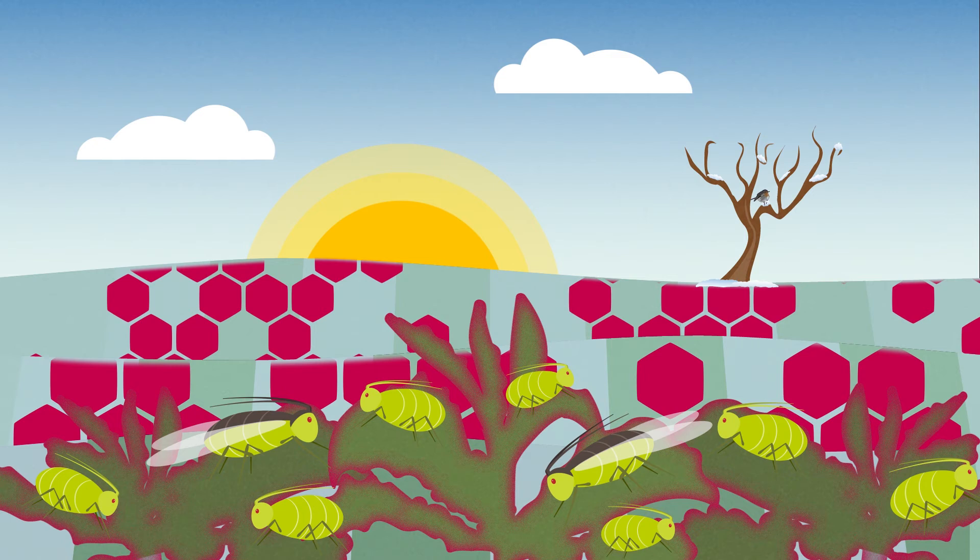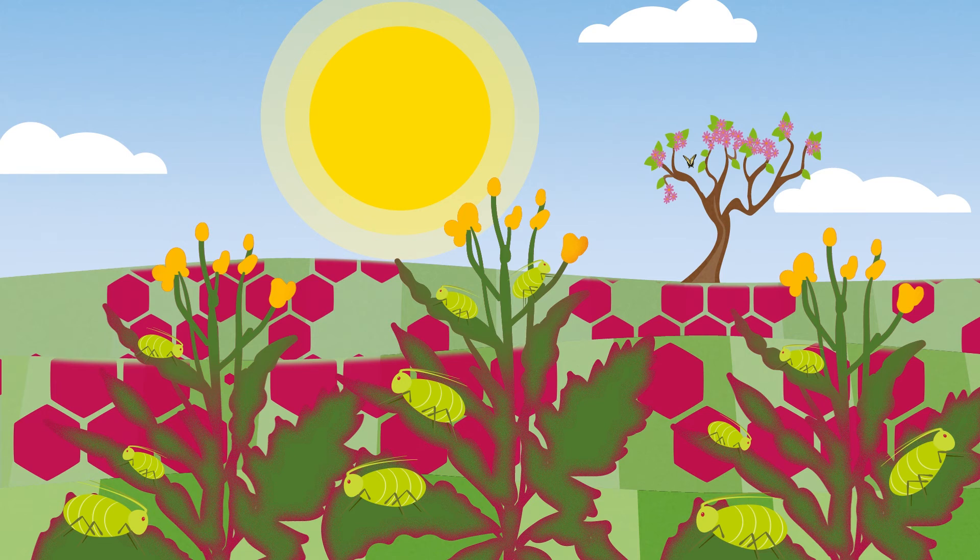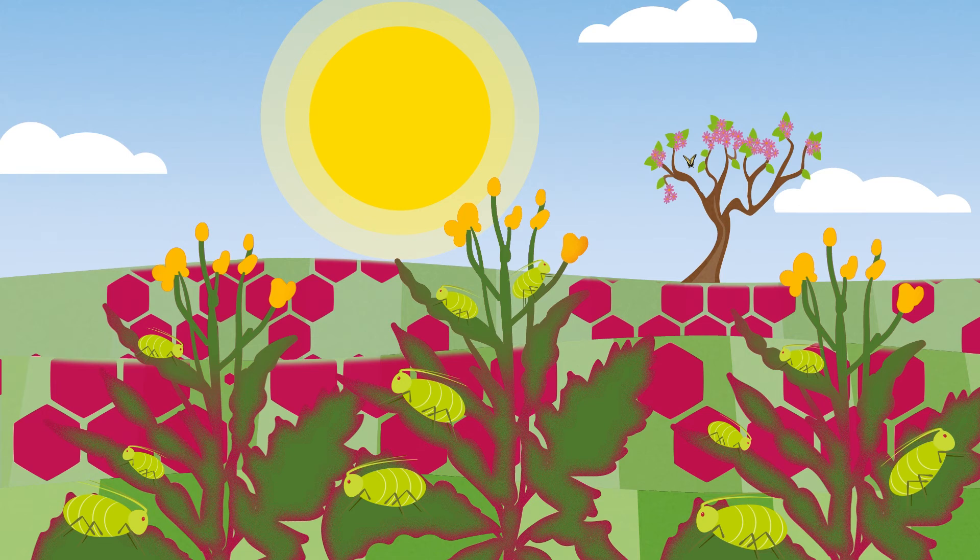If the winter also remains mild, the aphids overwinter on the rapeseed. As soon as spring arrives, they migrate to other crops and further spread the disease. An increasingly warmer climate increases the likelihood of an early and severe infection with the turnip yellows virus. The only way to counter the turnip yellows virus is to use resistant varieties.